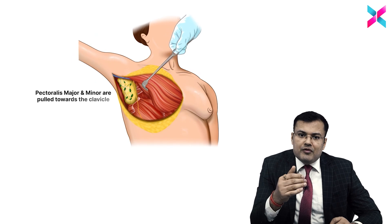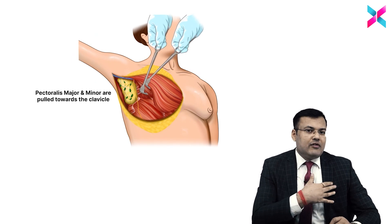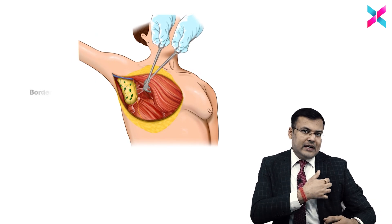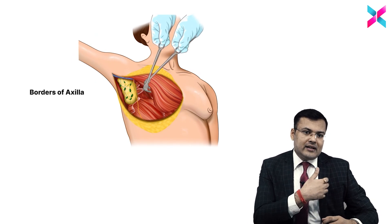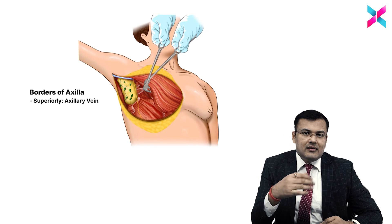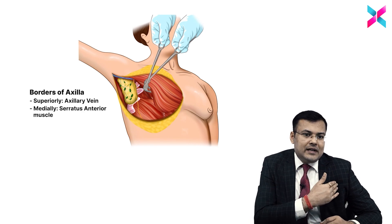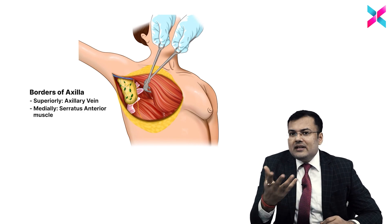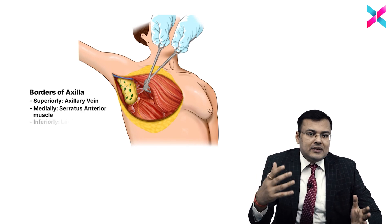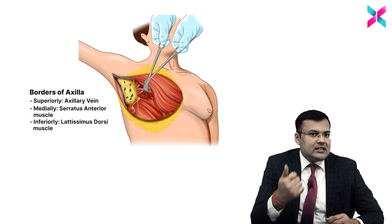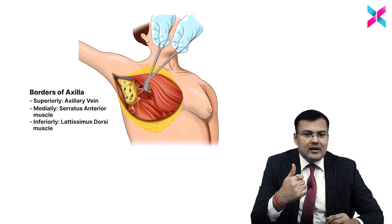Apart from this, for removal of lymph nodes, you can see that pectoralis major and minor have been retracted. See the borders of axilla: superiorly the axillary vein, medially there is serratus anterior muscle, and inferiorly you can see latissimus dorsi.